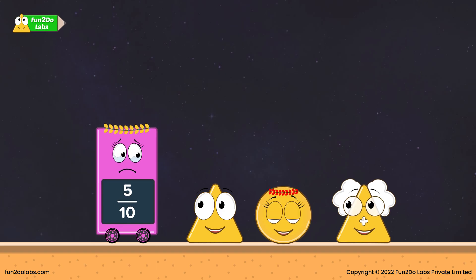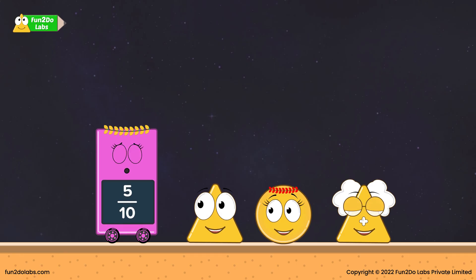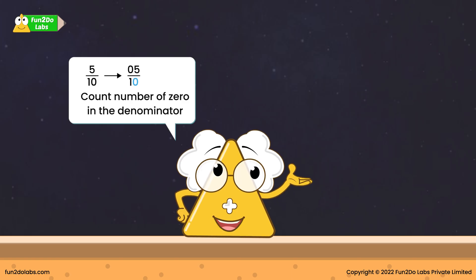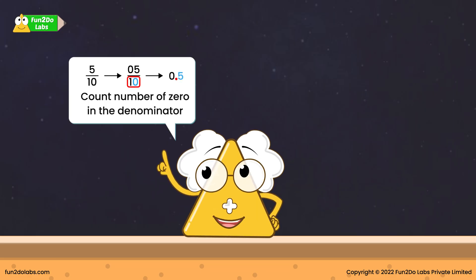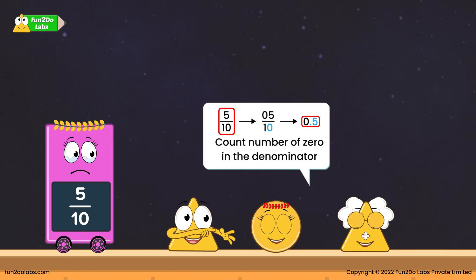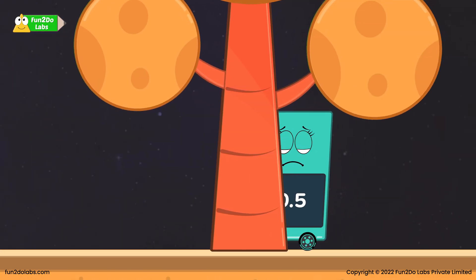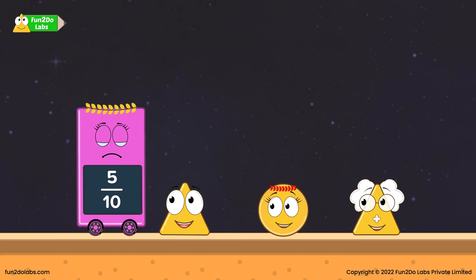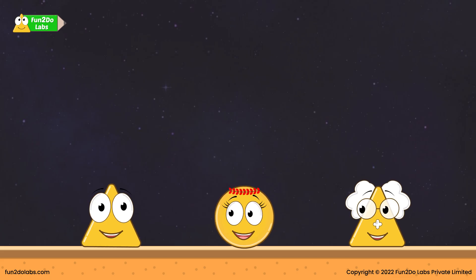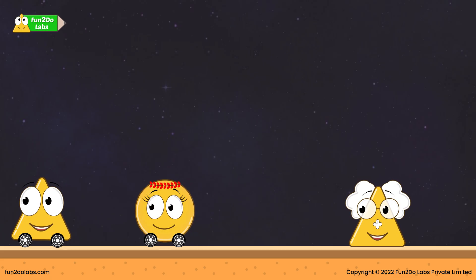Suddenly, another citizen comes crying and says: I am 5 by 10. I cannot find my decimal sibling. 5 by 10 means I will write 05 first. Since the denominator has one zero, I will start adding a decimal point from the right after one digit. So the decimal of 5 by 10 is nothing but 0.5. Look there — 0.5 is behind the tree. 5 by 10, that is your sibling! 5 by 10 is happy. Triho, come on, let us hurry now. We need to find all the decimals.